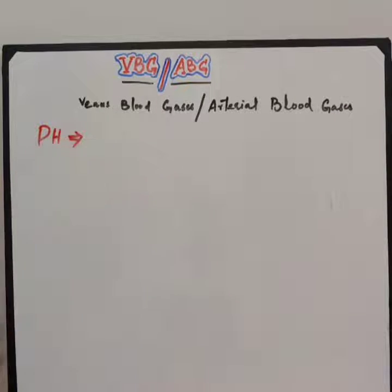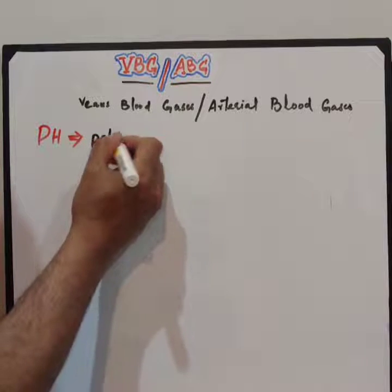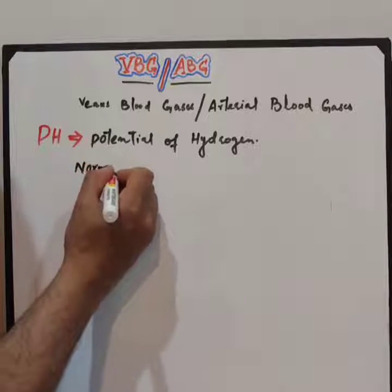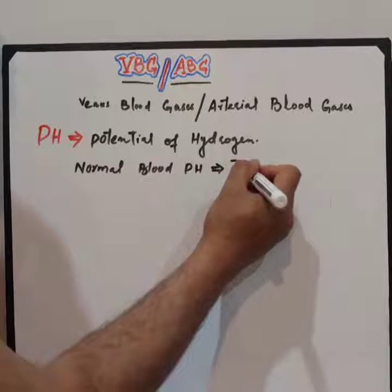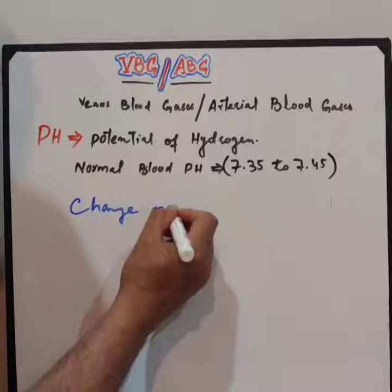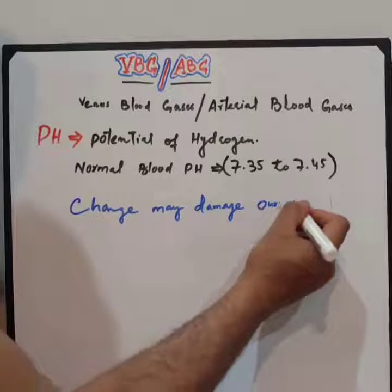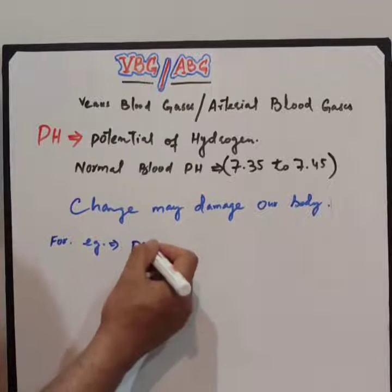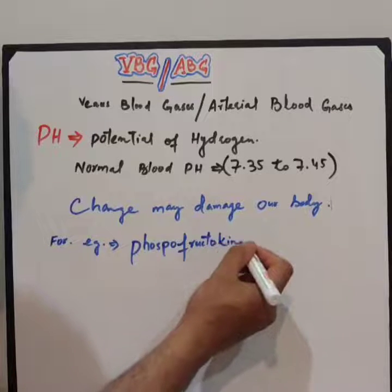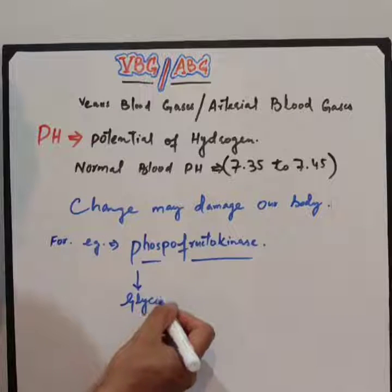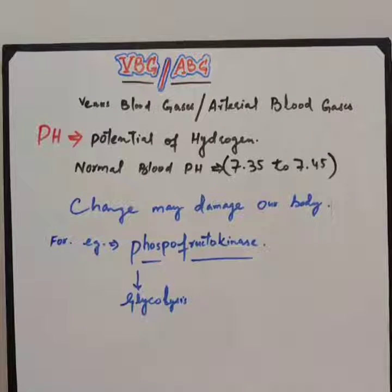Let's start from the first parameter: pH. pH means potential of hydrogen. The normal blood pH is 7.35 to 7.45. A slight change may damage our body. Even a slight imbalance can make our body irritable. For example, one of our enzymes called phosphofructokinase, used in glycolysis, is pH dependent. A slight decrease in pH can make this enzyme dysfunctional.